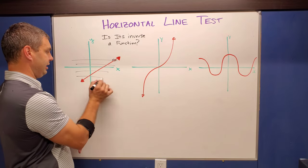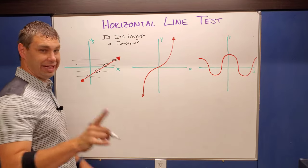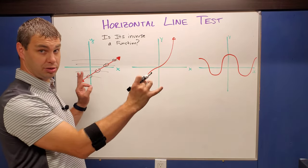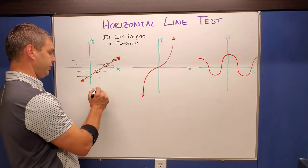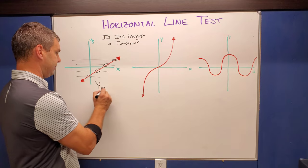If I do it again and again and again, every single time I draw one, it only hits each of those individual horizontal lines one time. So is this one a function for its inverse? Yes. Yes, it is.